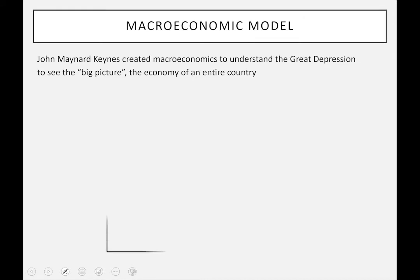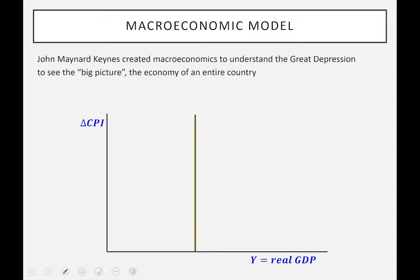I'll start with the graph that we'll be using in later lectures. I've got two axes here. You'll notice we don't put X on the horizontal axis — I'm going to put Y, which stands for real GDP, gross domestic product. On the vertical axis I'm going to put the Greek letter Delta and then CPI, which stands for consumer price index. I'm also going to put a vertical line — this is the LRAS line — and YP, which stands for potential GDP.